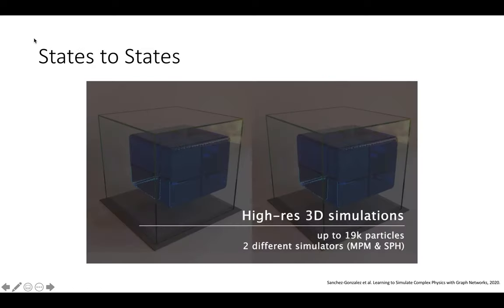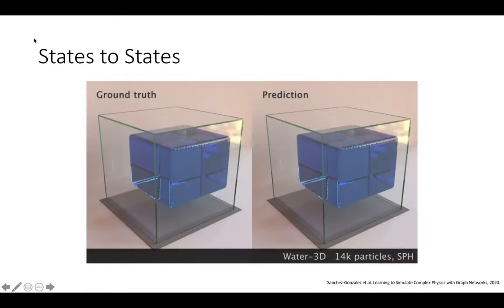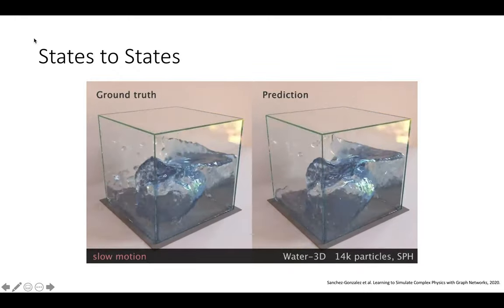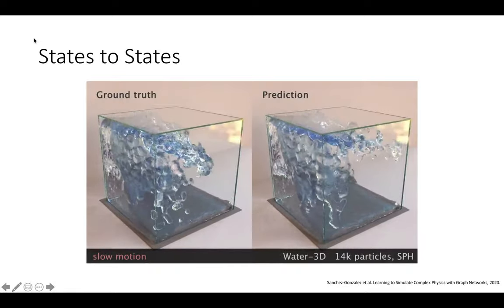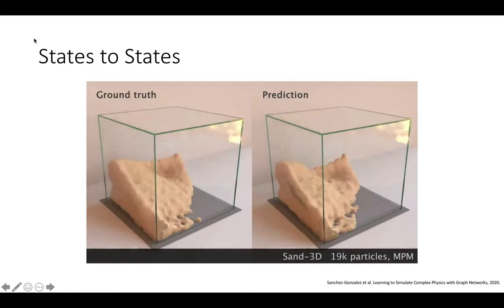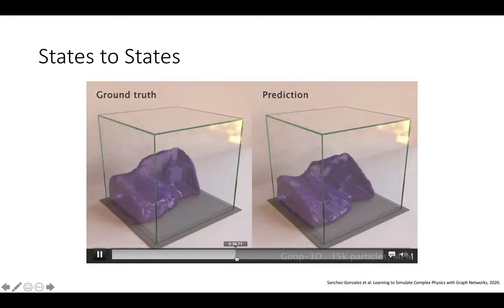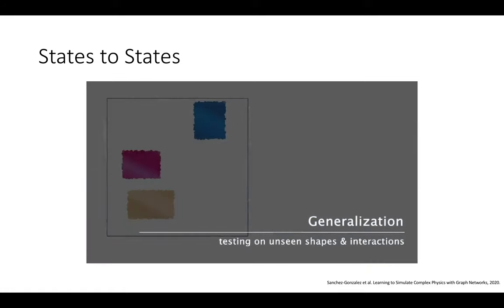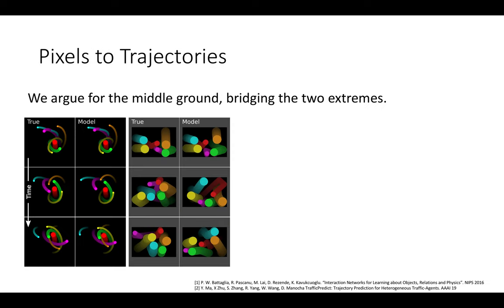Instead of predicting in the pixel space, in the intuitive physics community, researchers have been working on predicting directly in the state space. For example, given the state of a fluid represented by small particles, this work tries to perform interaction reasoning between these particles and predict their future states. However, when we apply this model in the real world, we cannot have direct access to the state representation — we always observe the world from vision.